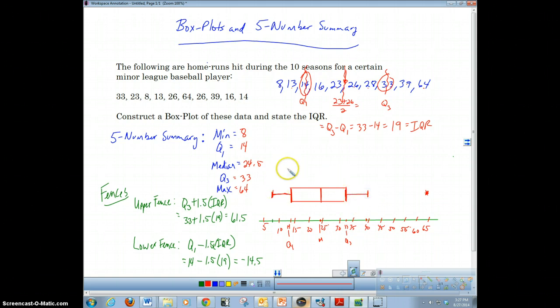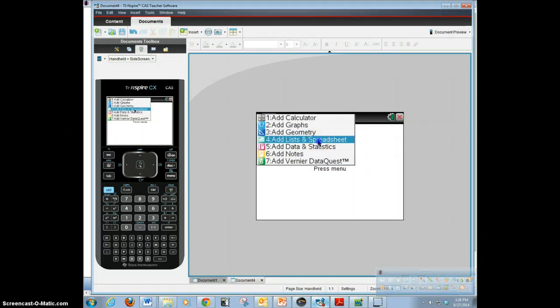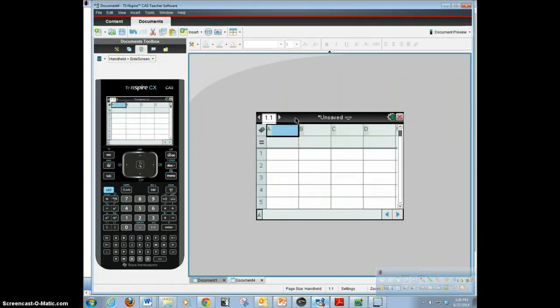We're going to title this Home Runs for a minor league player. And that is our box plot. We don't have a y-axis for box plots. So now let's take a look at how to do this in the Inspire. In the TI Inspire, we're going to add a list and spreadsheet, and we're going to title this Home Runs. And we're just going to enter in all these data.